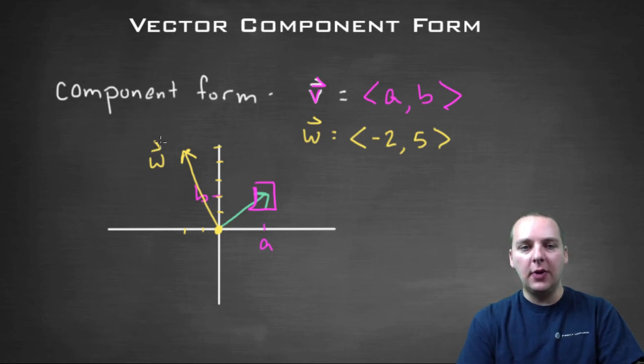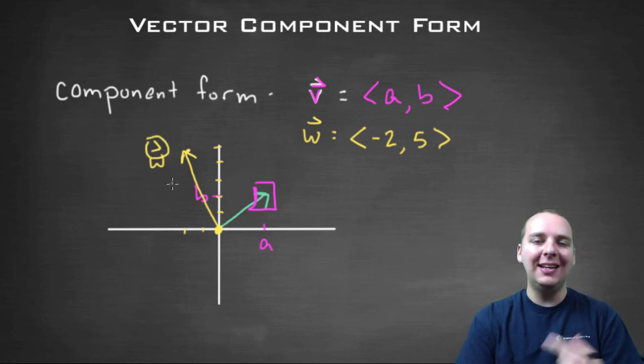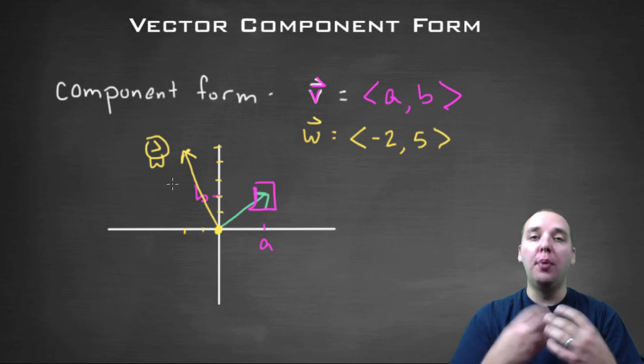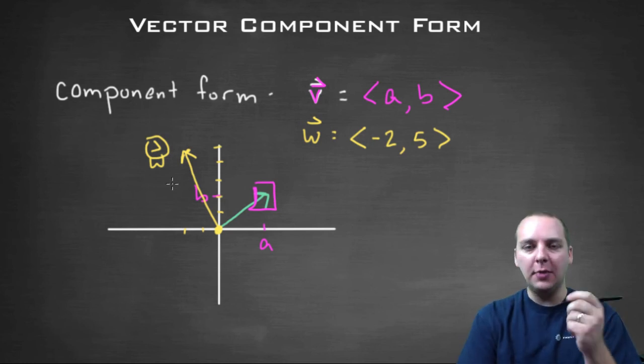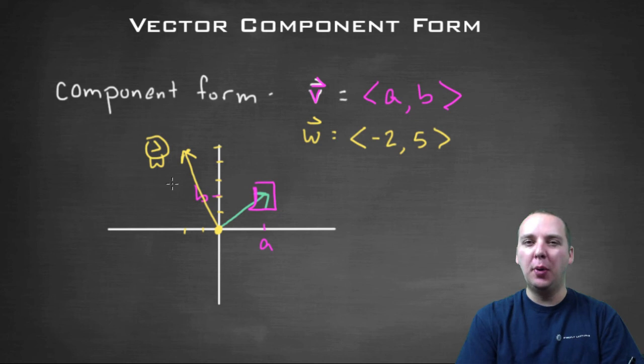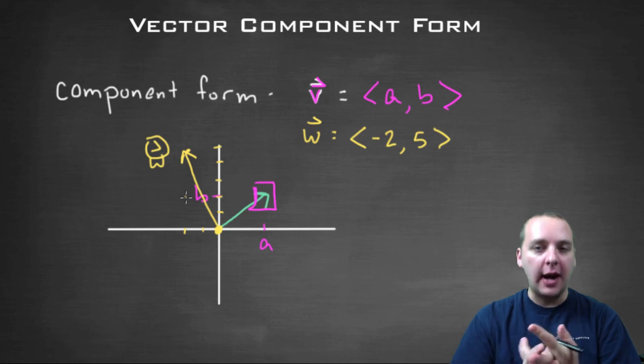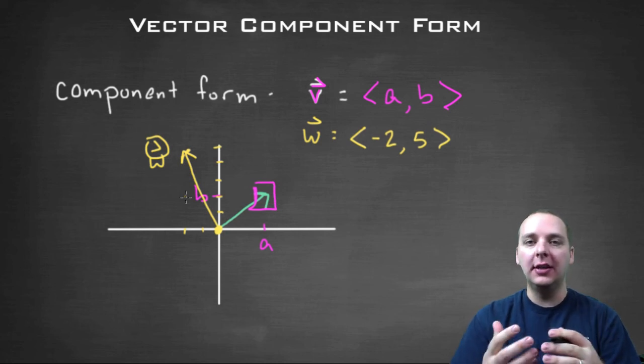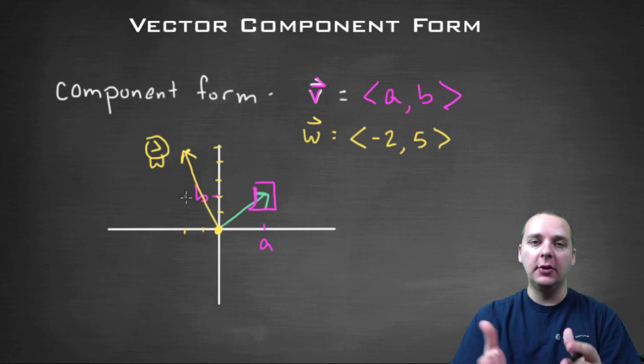So again vectors have these little half arrows. If you're reading it in a textbook, it might be just written in bold. But, handwriting, pencil and paper, it's hard to do bold letters. So if you're writing it by hand, you'll usually put a little half arrow over it to represent a vector. So that's component form. In another video, we'll talk about how to add and subtract vectors in component form, and all sorts of other things as it relates to vectors. But for this video, I think that'll be it. We just wanted to introduce the idea and notation of component form.